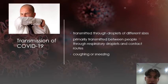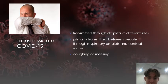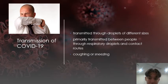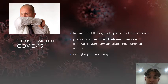Transmission may also occur through surfaces in the immediate environment around the infected person. Therefore, transmission of COVID-19 can occur through direct contact with infected people and indirect contact with surfaces in the immediate environment or with objects used by the affected person. Airborne transmission is different from droplet transmission as it refers to the presence of microbial particles within droplet nuclei, which are generally considered to be smaller particles.